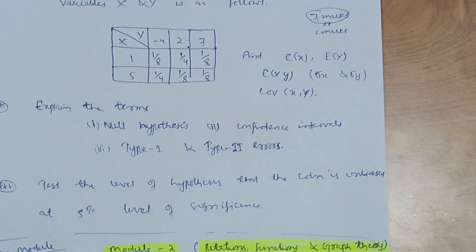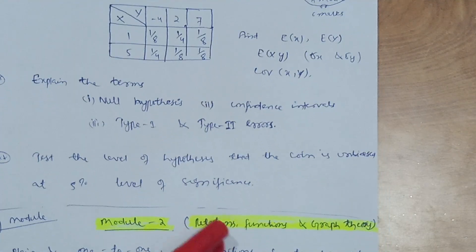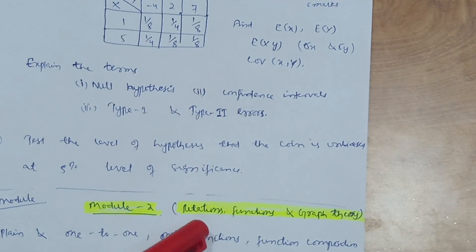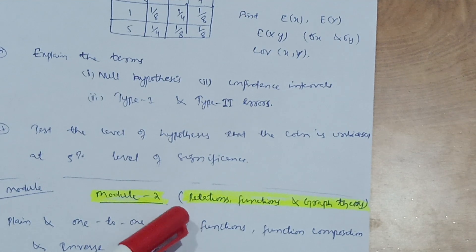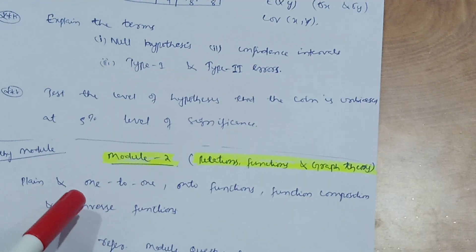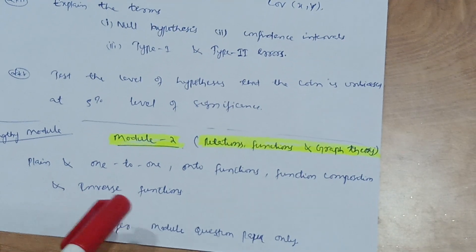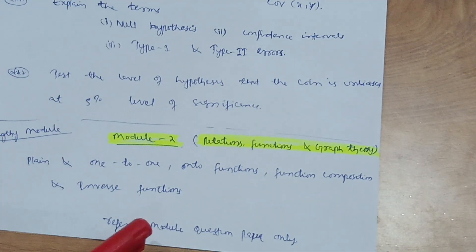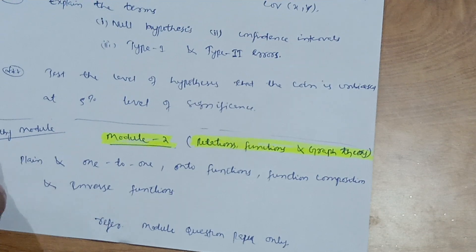These three modules are what you should focus on more than the other two. Modules 1 and 2 are new additions for the computer science branch — relations, functions, and graph theory. These are based on 12th class (PU) concepts you may already know. Module 2 is lengthy, but try going through at least the model question papers. Topics include plain functions, one-to-one and onto functions, function composition, and inverse functions.